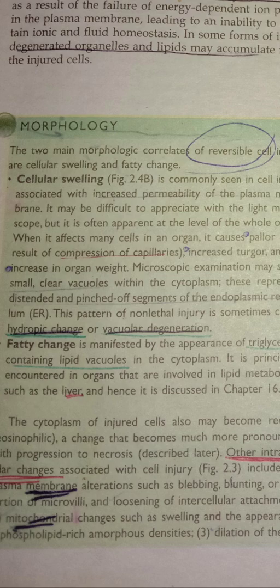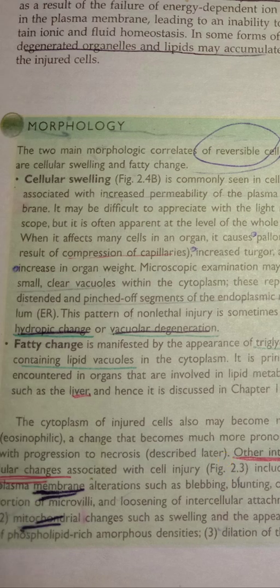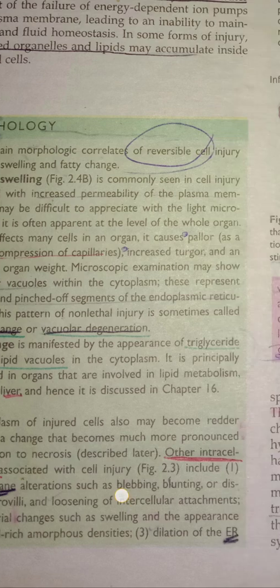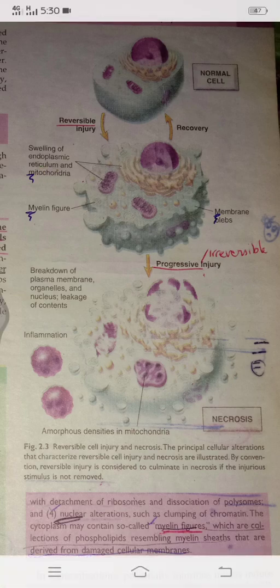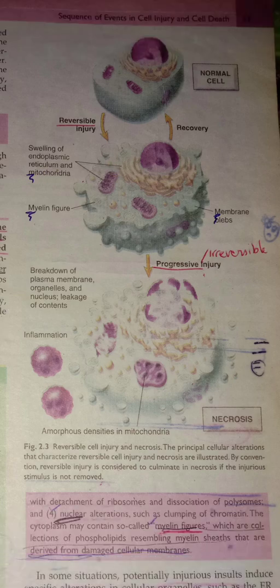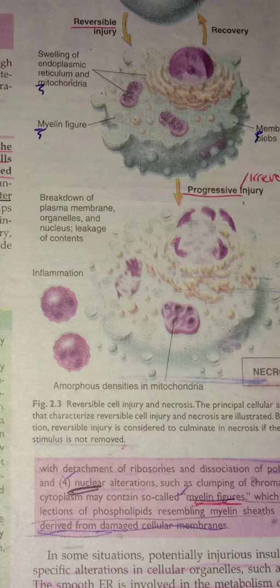Other intracellular changes include membranous changes like bleb formation or mitochondrial changes — swelling or dilation of endoplasmic reticulum. In reversible injury there is damage in mitochondria and endoplasmic reticulum, with swelling of both. In the cytoplasm there are myelin figures, and in the membrane there may be bleb formation — the membrane is disrupted causing balloon-like swellings. If the stimulus persists and continues disrupting, it may lead to irreversible or progressive injury, with breakdown of plasma membrane, organelles, nucleus, and leaking cellular contents with inflammation outside, and amorphous densities in mitochondria.